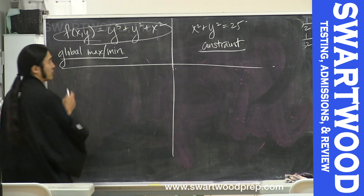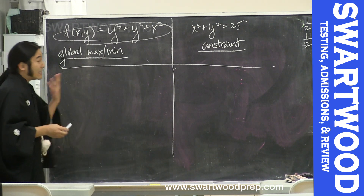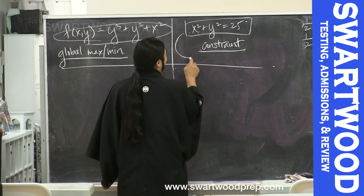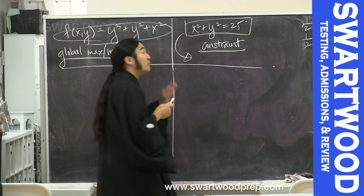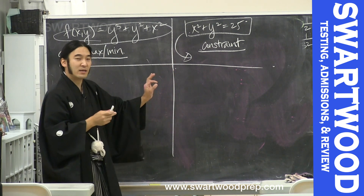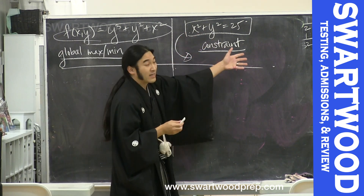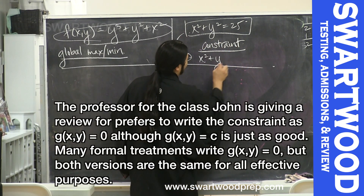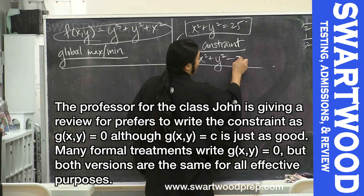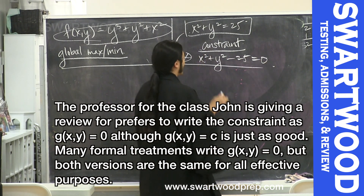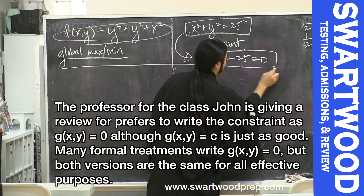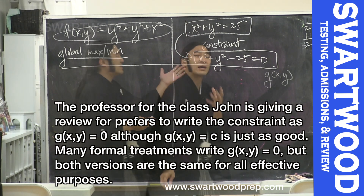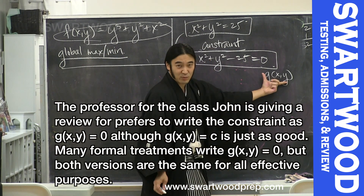The first setup: you need some function f and then you need that constraint. Here's my advice — take that constraint and immediately rewrite it so that the right-hand side is zero. So x squared plus y squared minus 25 equals zero. That's the same equation.